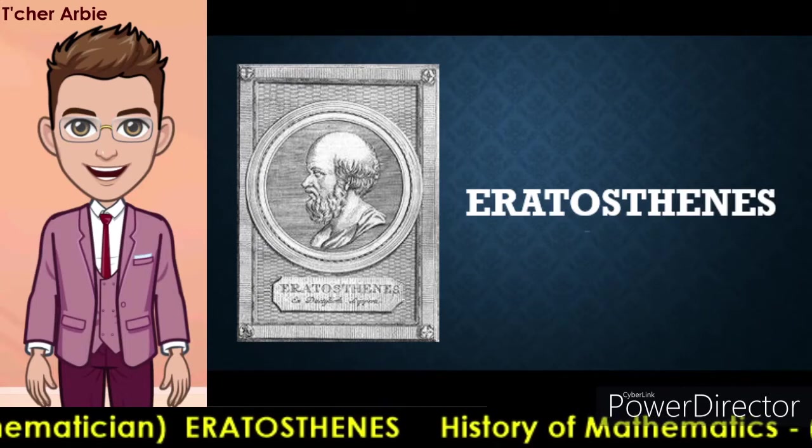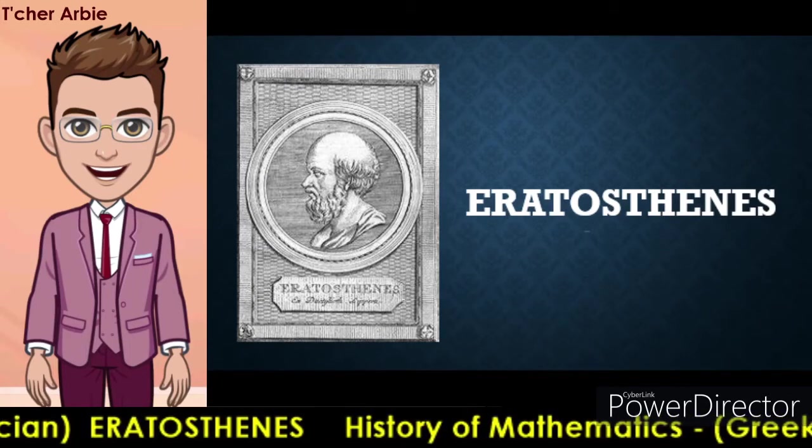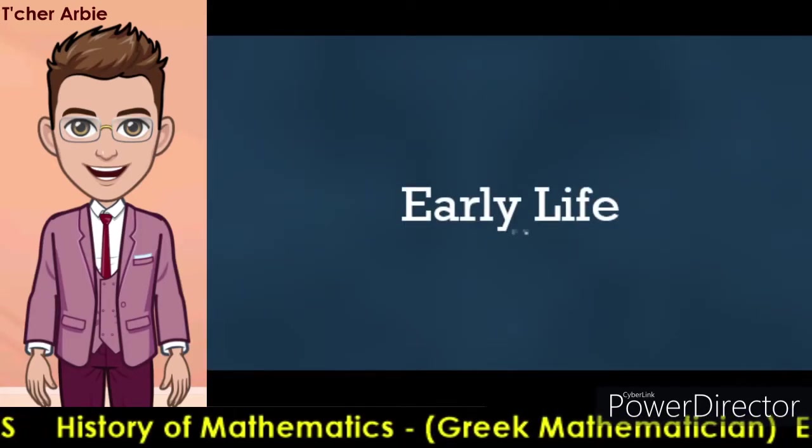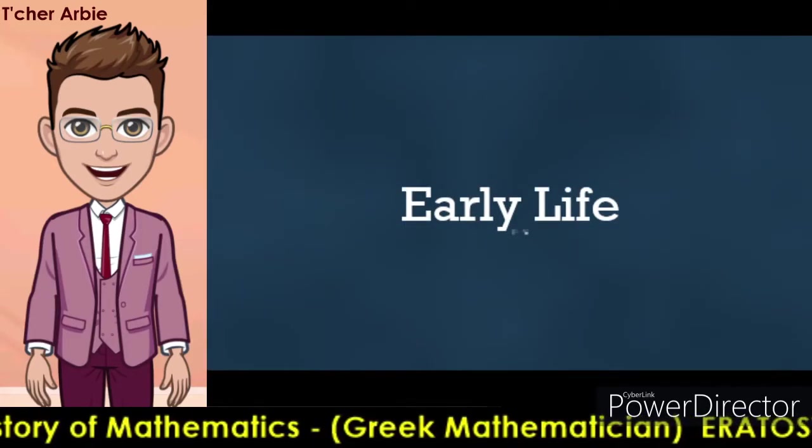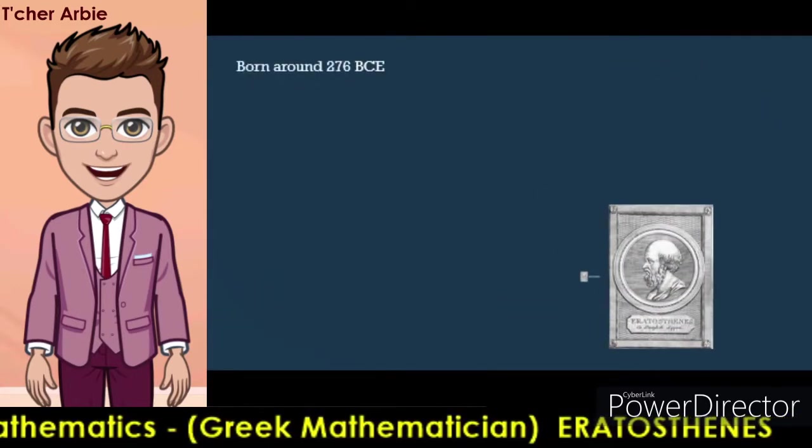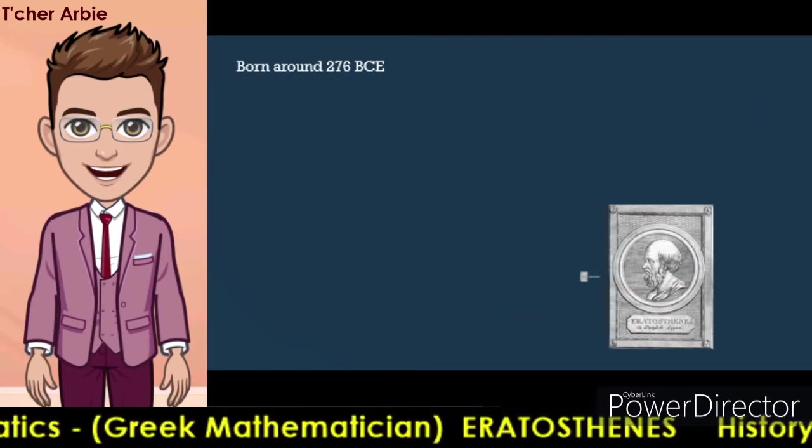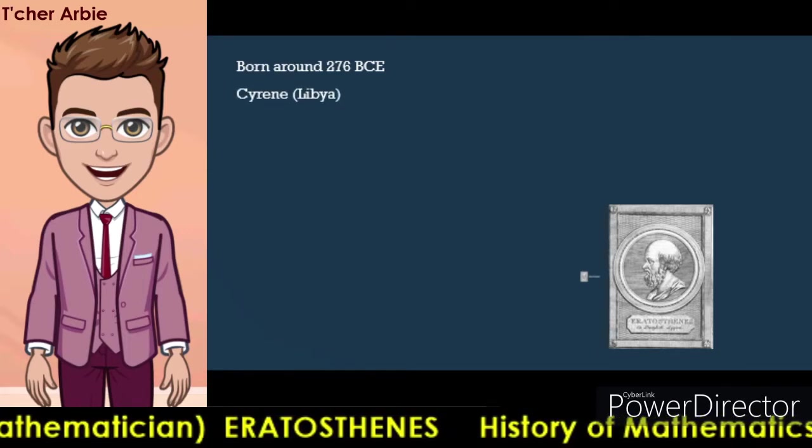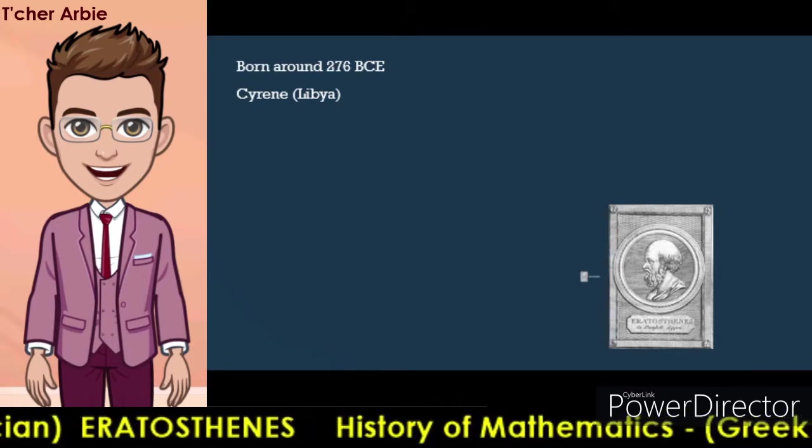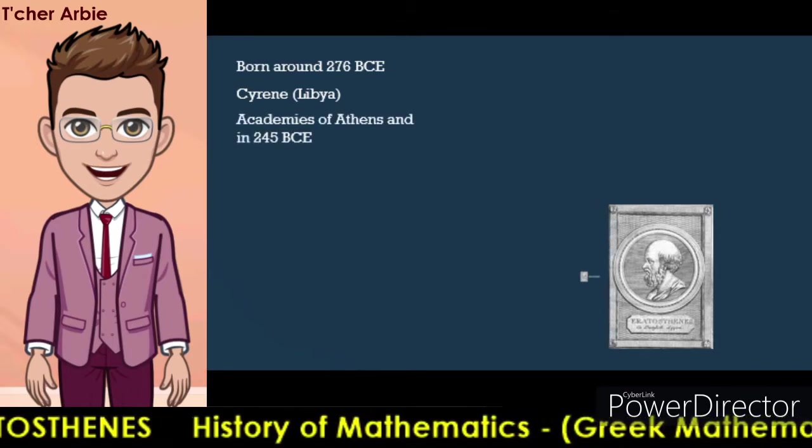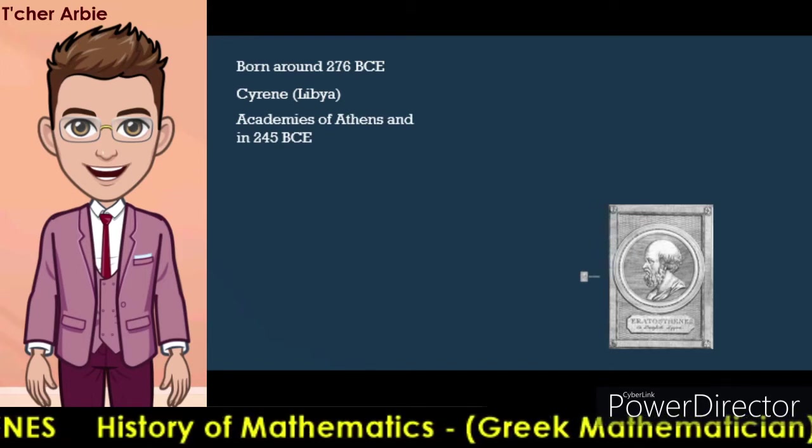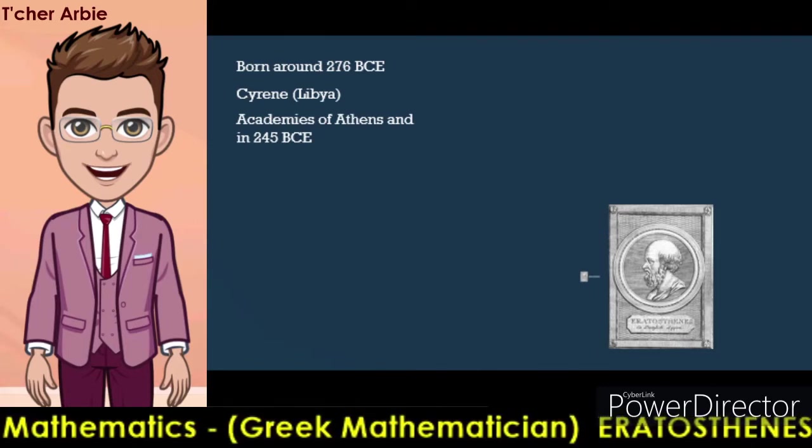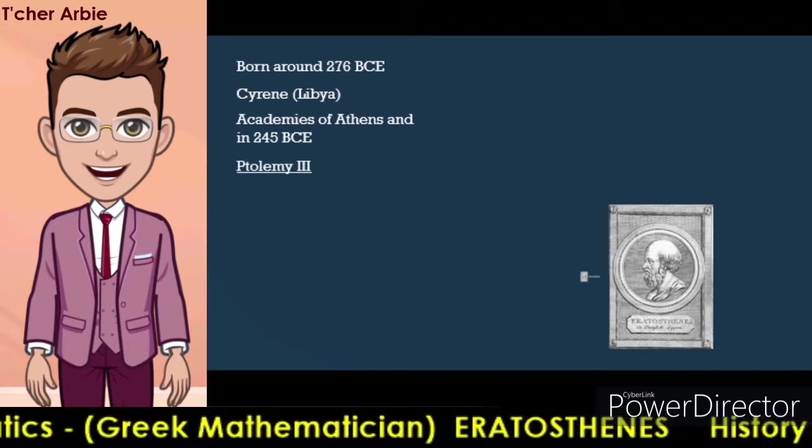During his early life, Eratosthenes was born around 276 BCE in a Greek colony in Cyrene, a territory located in present-day Libya. He was educated at the academies of Athens, and in 245 BCE, after earning attention for his skills, he was invited by Ptolemy the third to tutor his son.